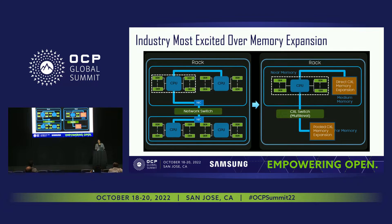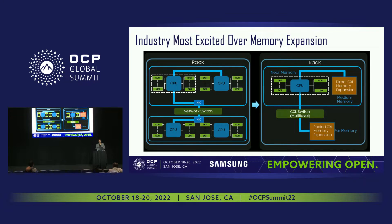Even though you hear about all three types, there is a general excitement, more excitement over memory expansion as the first use case. Today, to expand memory you would have to go over the CPU and have another node, or go over network to have other nodes in the system, and the memory from these nodes has to be accessed with a latency delay. Most modern workloads require larger memory than what is available with DIMM slot-based expansion.